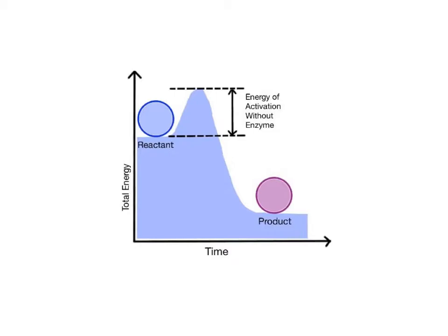To demonstrate activation energy, let's examine the following graph. The horizontal x-axis represents the progress of the reaction over time, while the vertical y-axis represents the total potential or chemical energy of the reactants and products. We can see that the reactants have a higher amount of potential energy than the resulting products. The raised peak in the graph represents the activation energy that must be supplied in order to break the reactants bonds and start the reaction.